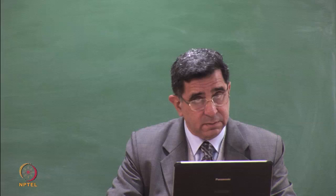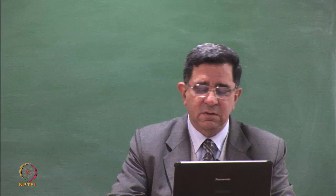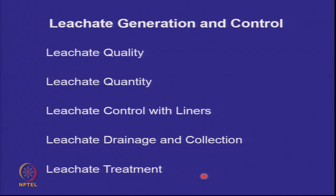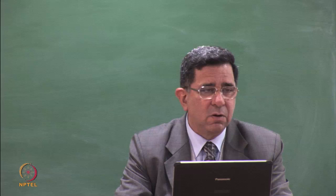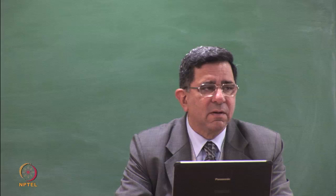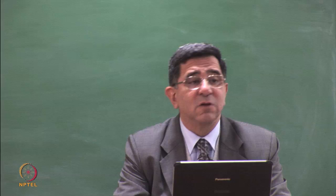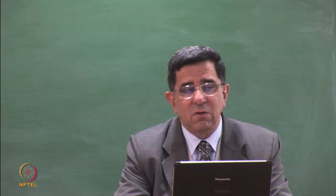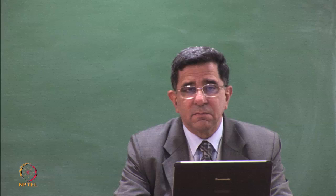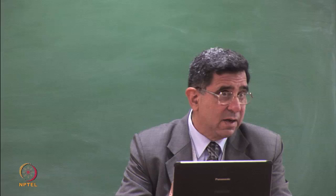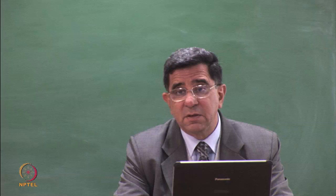We are going to talk about leachate generation and control: first quality, then quantity, and how liners, drainage, and the collection system help us collect this leachate in a controlled manner. Then, what do we do with the leachate we have collected? It is very difficult to predict what the quality of leachate will be — the constituents present and their concentrations.